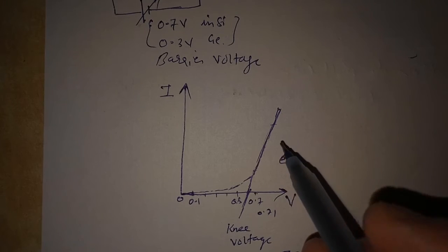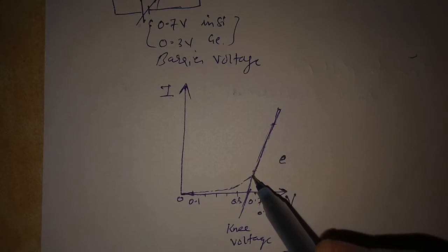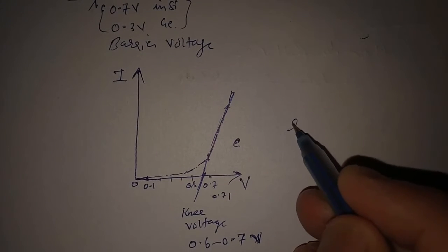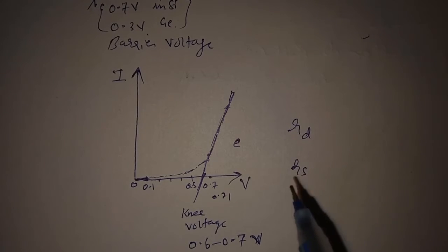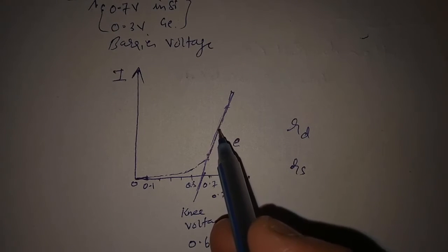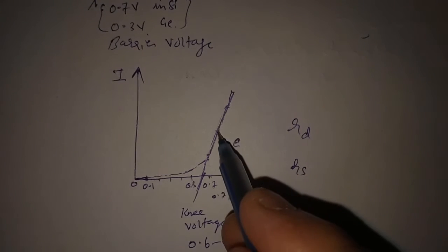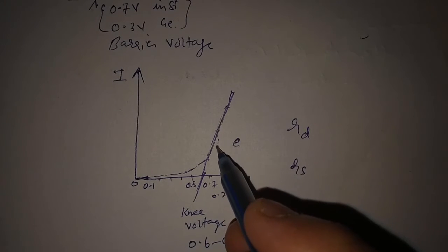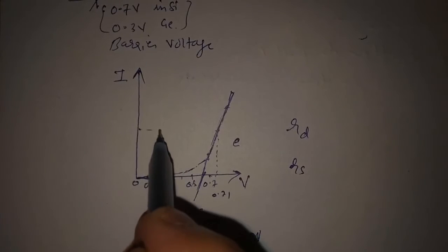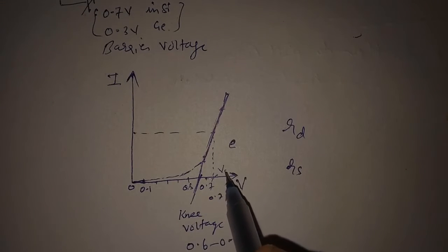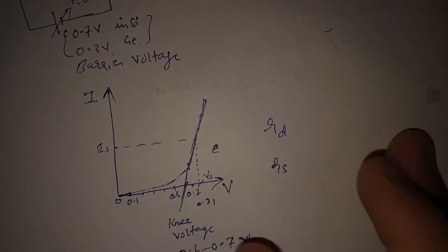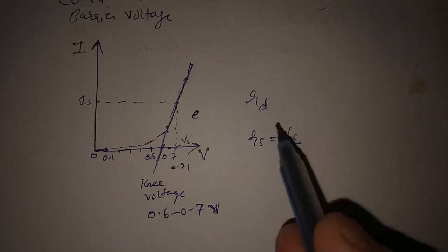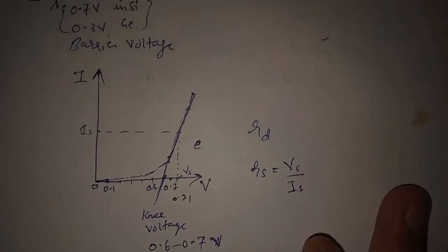In the forward bias condition, we can find resistance within the linear region. There are two types: static resistance and dynamic resistance. Static resistance is obtained from a single voltage and current value. We take any point in the straight line, draw perpendiculars to both axes to get a static voltage Vs and static current Is, and the ratio Vs divided by Is gives the static resistance.